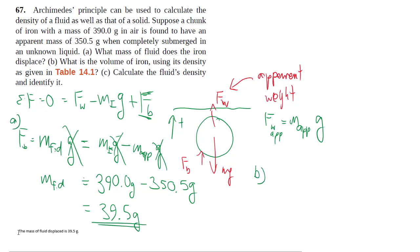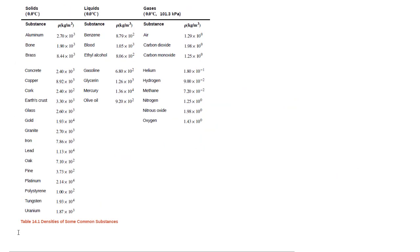In part B, they want the volume of the iron because that's going to help us find the volume of the fluid to get the density. The volume of the iron, of course, is my mass of the iron divided by my density of iron. And if you look at table 14.1,